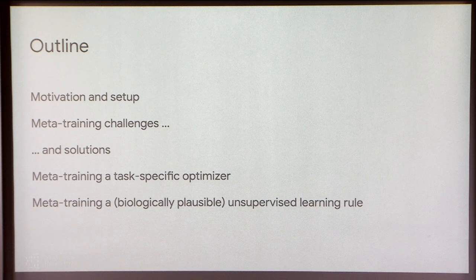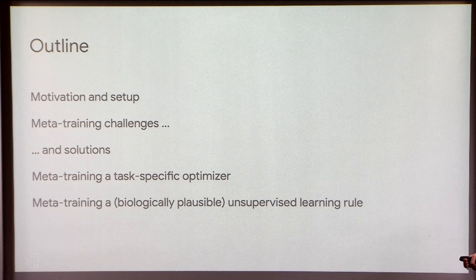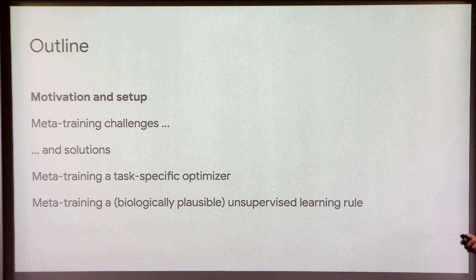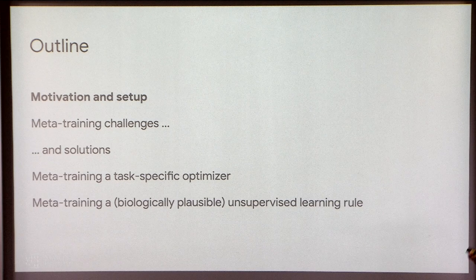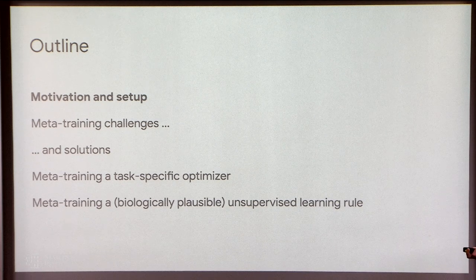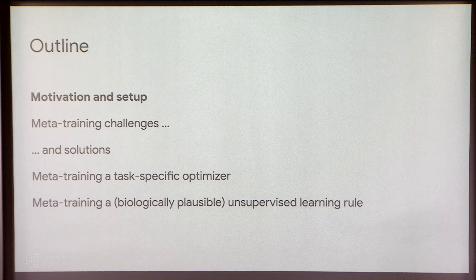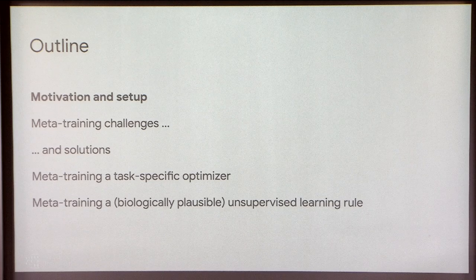I'm going to give some motivation for why we should care about learned optimizers, talk about some of the challenges in training optimizers, and some solutions to those challenges. I'm going to show two specific examples: one where we meta-train an optimizer targeting a specific class of problems and it outperforms all existing techniques, and a second where we meta-train an update rule targeting a task where we are unable to write down the loss function directly.